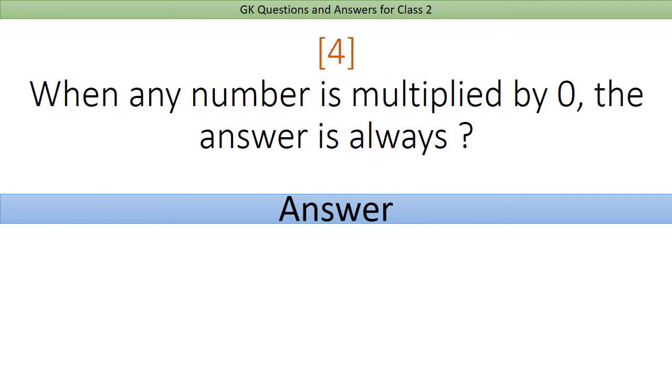When any number is multiplied by zero, the answer is always? Answer: Zero.